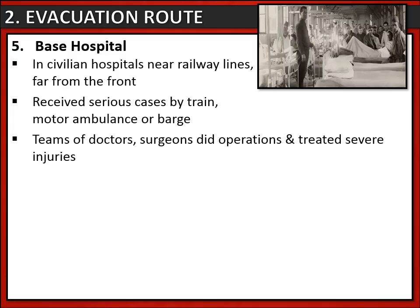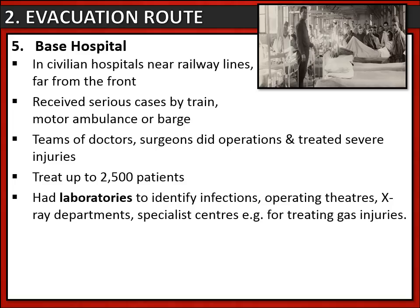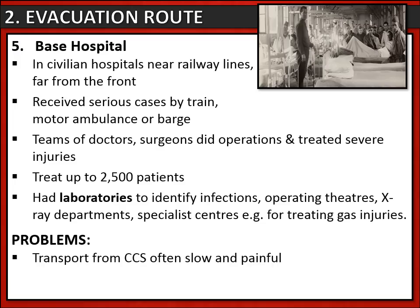Base hospitals could treat up to 2,500 patients, giving them a higher capacity than casualty clearing stations. They had amazing resources like laboratories to identify infections, x-ray departments, and some even had specialist centres for treating certain injuries like gas injuries. Like every part of the evacuation route, they had problems, and the main problem was that transport from the casualty clearing stations to the base hospitals was often, especially at the start of the war, slow and incredibly painful. That led to a time delay in getting to base hospitals, which could have terrible effects on the wounded soldiers and even cost lives.